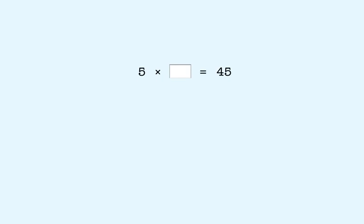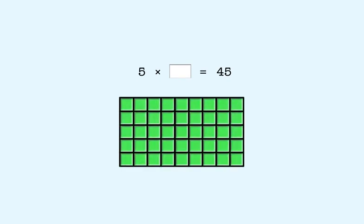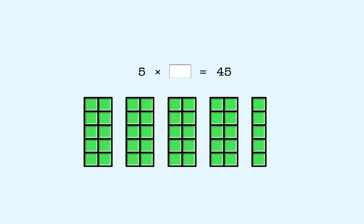Another example: 5 times what number equals 45? In this example, the product is 45, which we can show like this. We can separate this into 4 tens plus 5 ones.